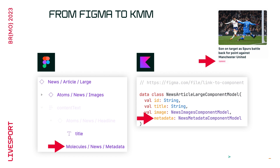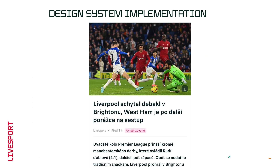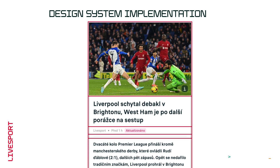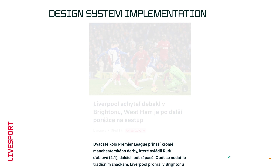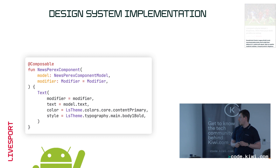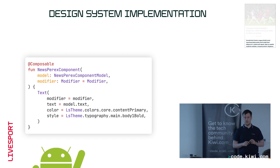For the next example I've chosen the article detail screen. If you tap on the large article, this screen opens. It consists of multiple components arranged in a vertical stack. Let's focus on a component called 'Parax' — it contains the most important information from the article. We have two UI implementations: the first is the Android Compose component.